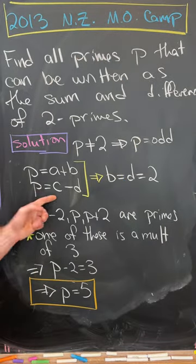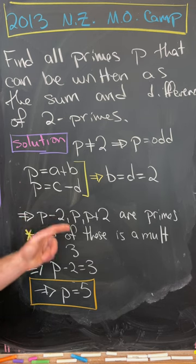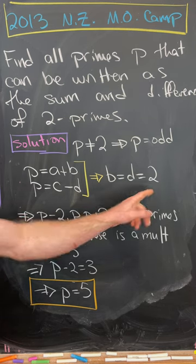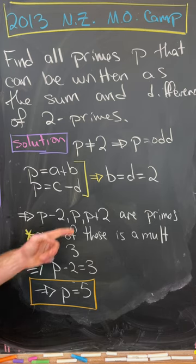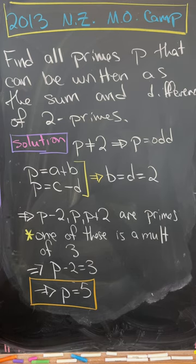Then p is a plus b and p is c minus d. But since p is odd, these two have to be equal to 2, b and d. But that means p minus 2, p, and p plus 2 are all primes.